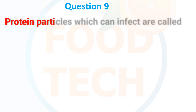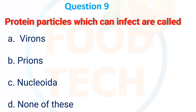Protein particles which can infect are called: A. Virion, B. Prion, C. Viroid, D. None of these. The answer is B: Prion.